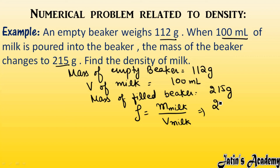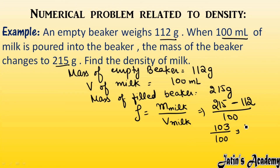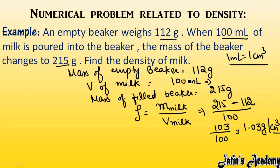The mass of milk equals the mass after pouring the milk minus the mass of the original empty beaker, divided by the volume. Using the subtraction formula: 215 minus 112 equals 103, divided by 100, gives 1.03 grams per centimeter cube — or grams per milliliter, since 1 milliliter equals 1 centimeter cube. So the density of this milk is 1.03 grams per centimeter cube.